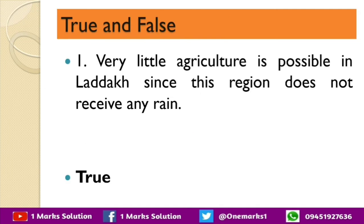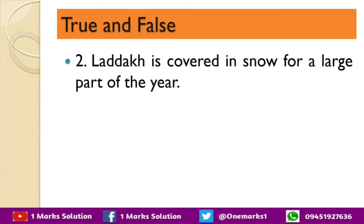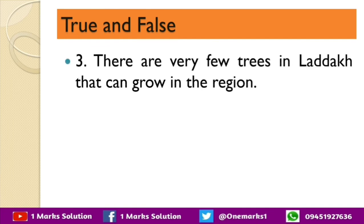The next question type is True and False. All statements given here are true, so you can use these to attempt multiple choice and fill in the blank questions as well. First: very little agriculture is possible in Ladakh since this region does not receive any rain — True. Ladakh is covered in snow for a large part of the year — True. There are very few trees that can grow in the Ladakh region — True.